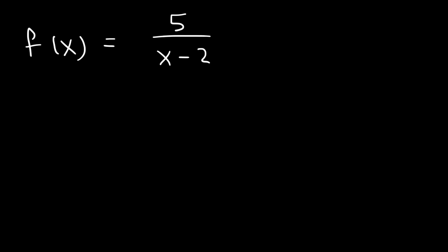Now what about if we have a rational function? Let's say a fraction, like 5 divided by x minus 2. How can we find the domain of this function? In this function, x could be anything except a value that's going to produce a 0 in the denominator. So x minus 2 cannot equal 0, which means x can't be positive 2. Because if you plug in 2, 2 minus 2 is 0, and whenever you have a 0 in the denominator it's undefined — you're going to have a vertical asymptote. So for rational functions, set the denominator not equal to 0 and then you can find the value of x.